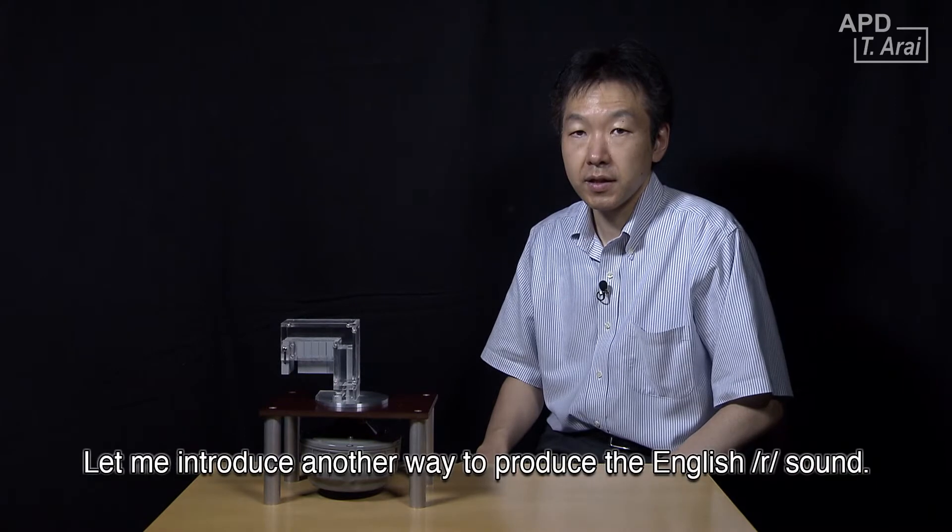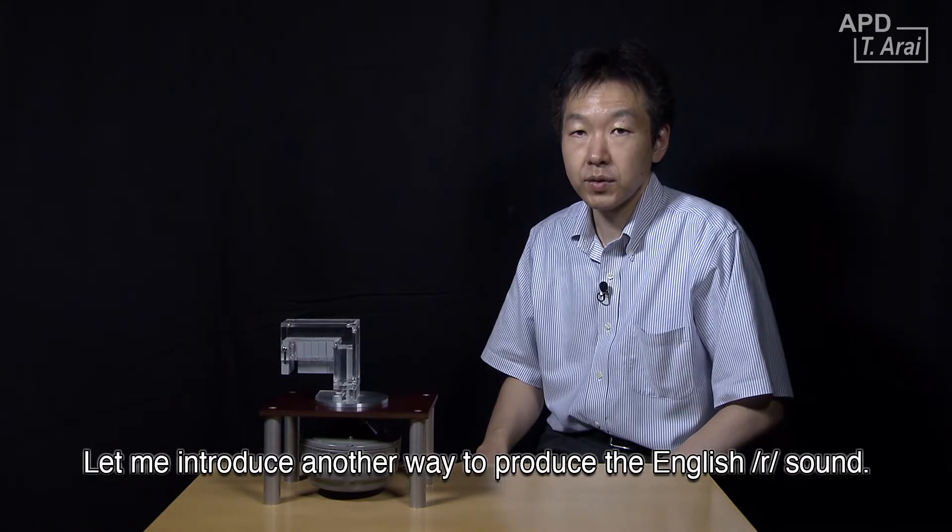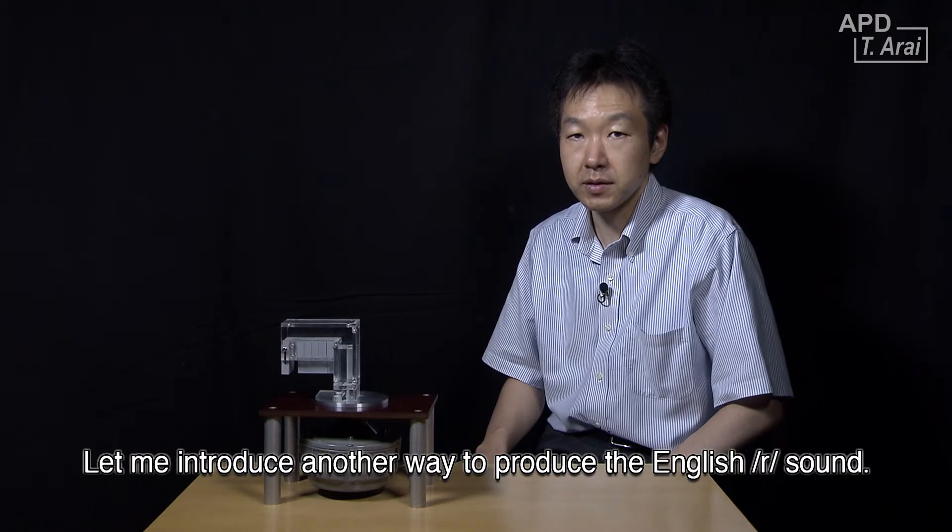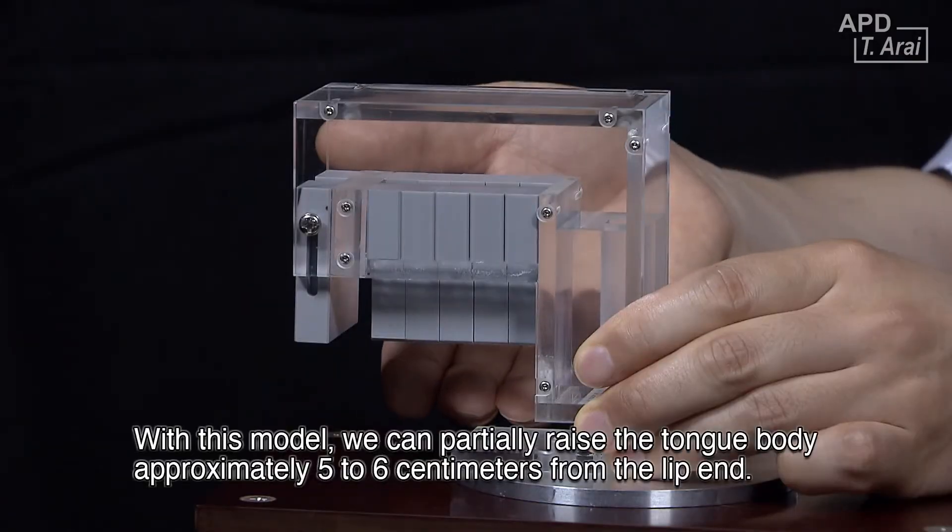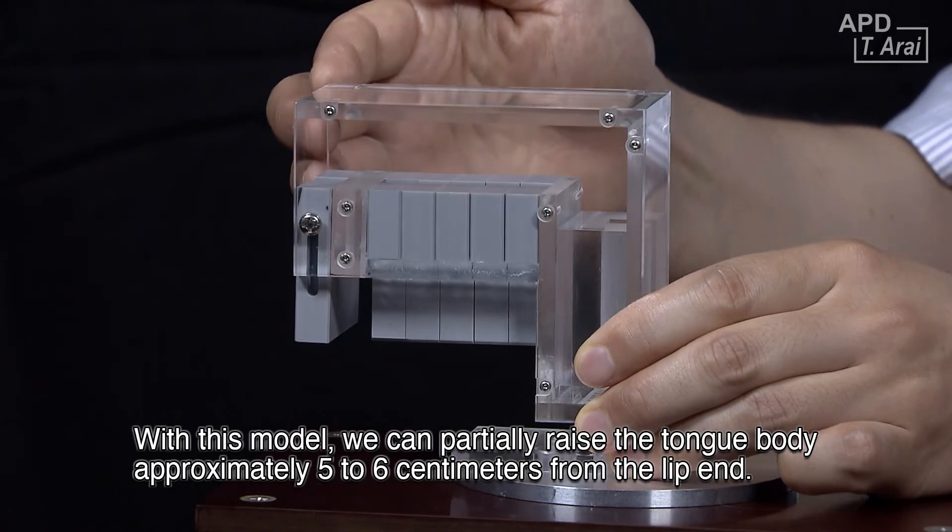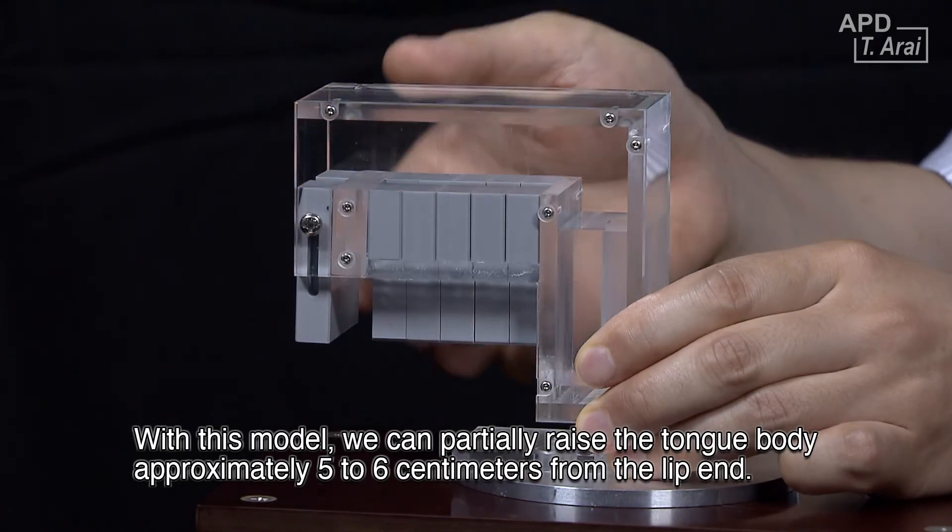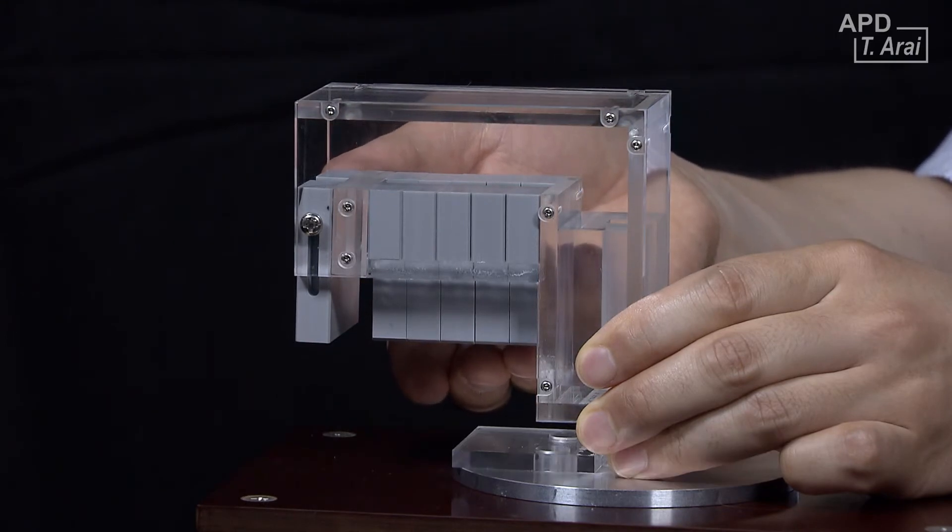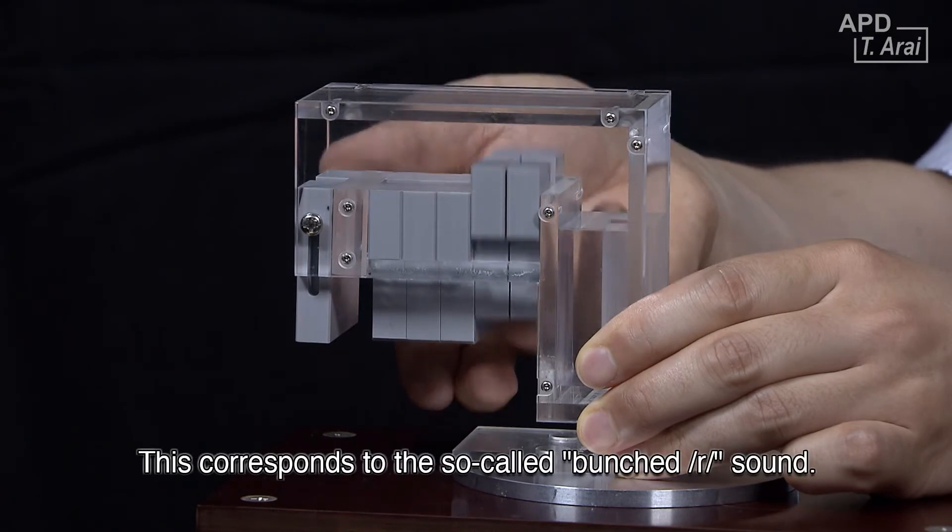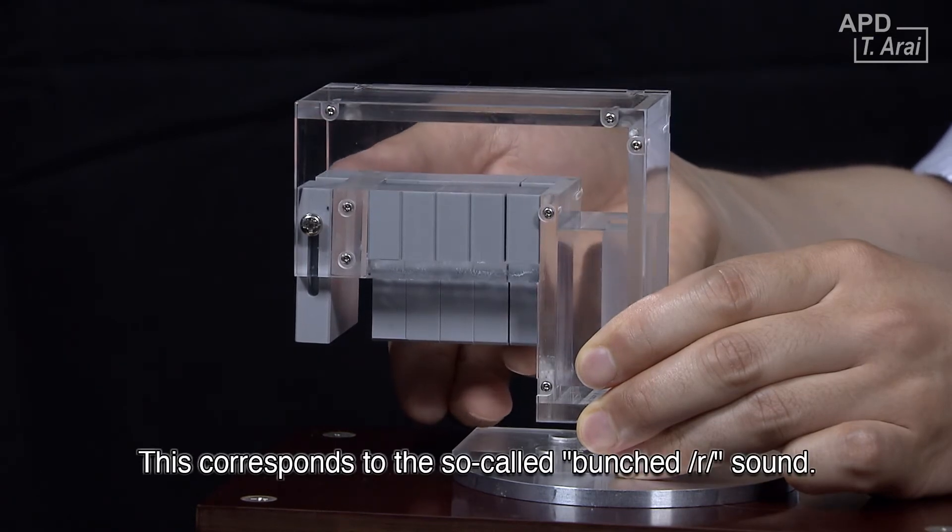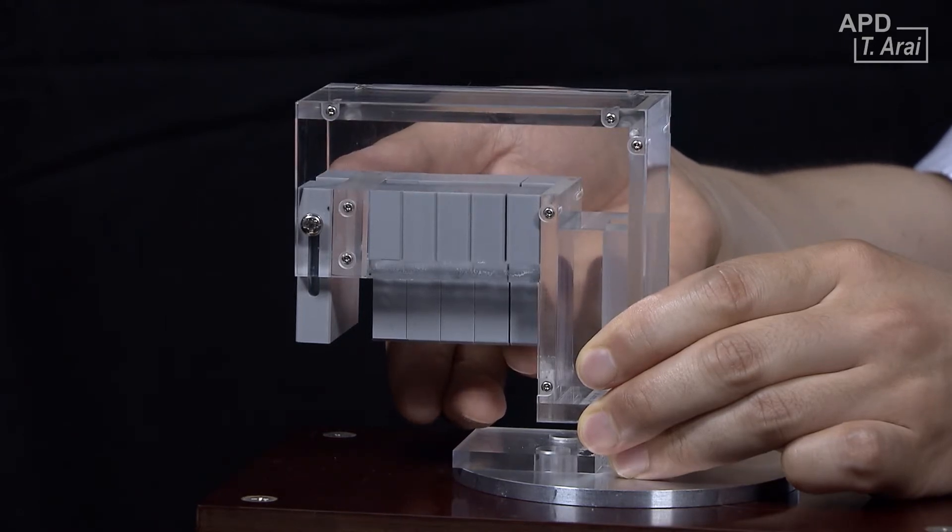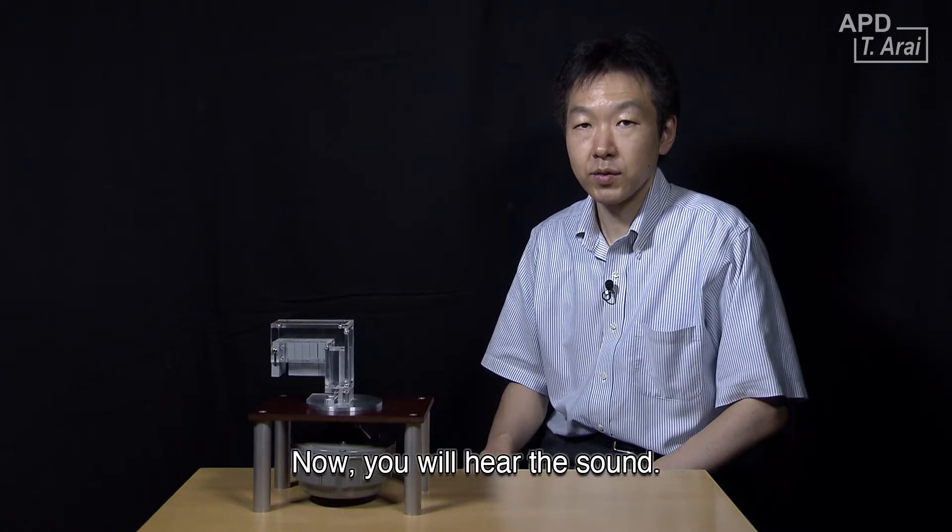Let me introduce another way to produce the English R sound. With this model, we can partially raise the tongue body approximately 5 to 6 centimeters from the lip end. This corresponds to the so-called bunched R sound. Now you will hear the sound.